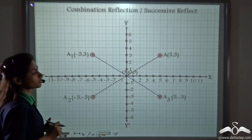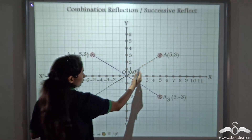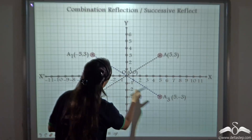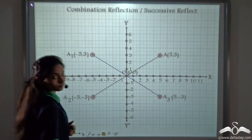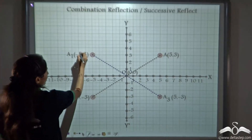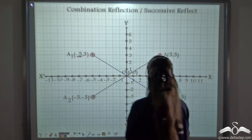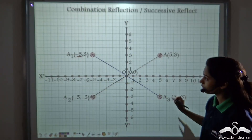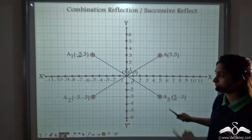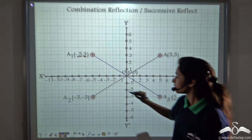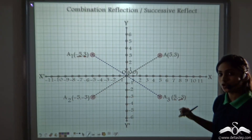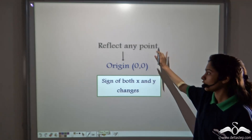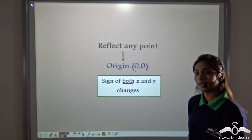Notice an interesting thing from this image. You got A2 from A by reflecting through the origin, and you can also get A3 directly from A1 if it is reflected through the origin. The x coordinate of A1 is minus 5, whereas in A3 it becomes positive 5. The positive y coordinate changes to negative. Both signs are changing. Whenever we reflect any point through the origin, the sign of both x and y changes.